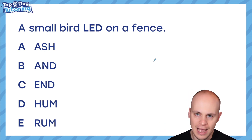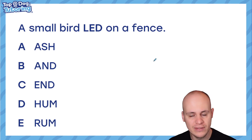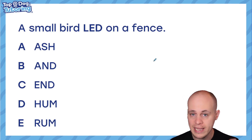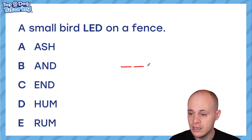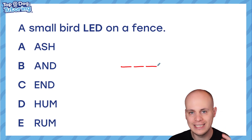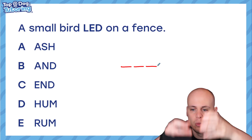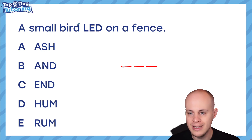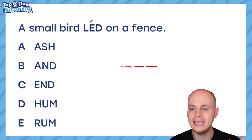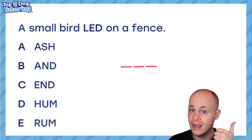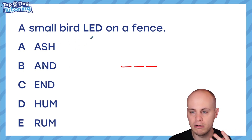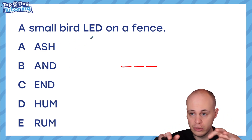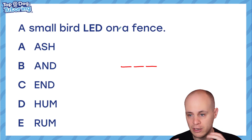Today in this question type we have a sentence and there is a word in capital letters in the middle of this sentence and it is missing three consecutive letters — they have been taken out of the word. Consecutive simply means back to back, next to each other, so there's no letters in between. They come out as one chunk together, and from the five options it's our job to pick the three letters that could be put back in this word to make a correctly spelled word.